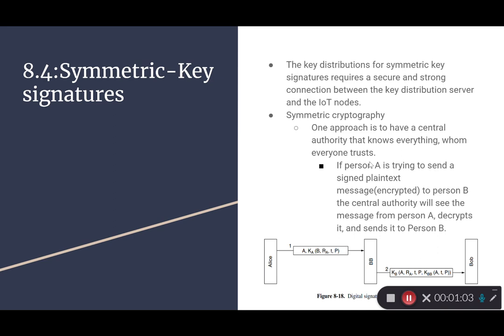Person A in the scenario, the figure below, would be Alice sending to person B, being Bob. The central authority in the situation would be BB, which is the big brother, decrypting the message and also being sent the encrypted message.